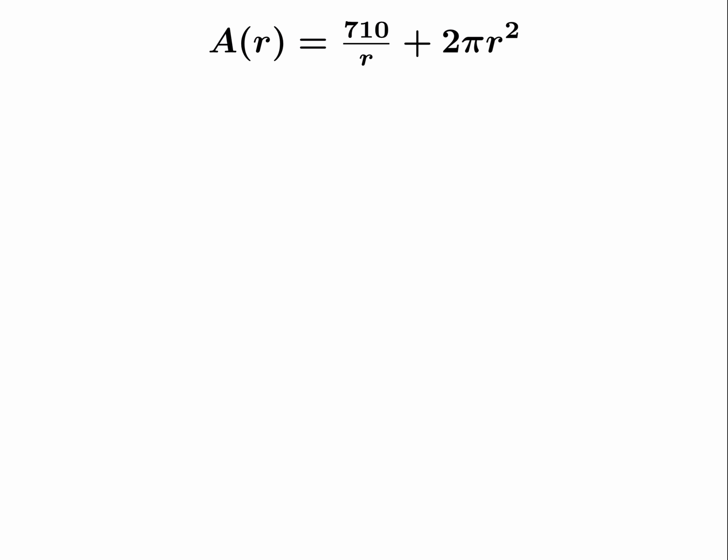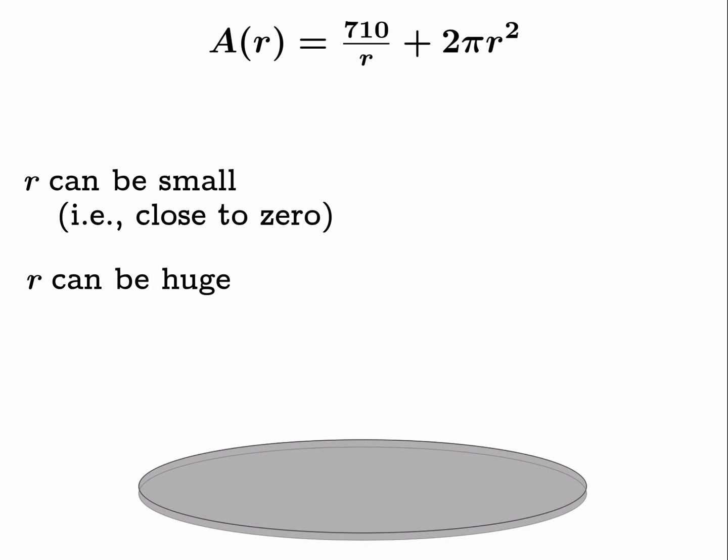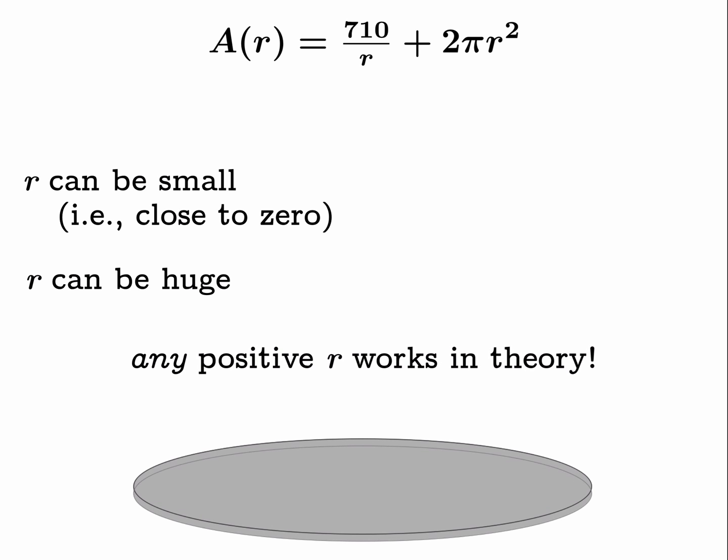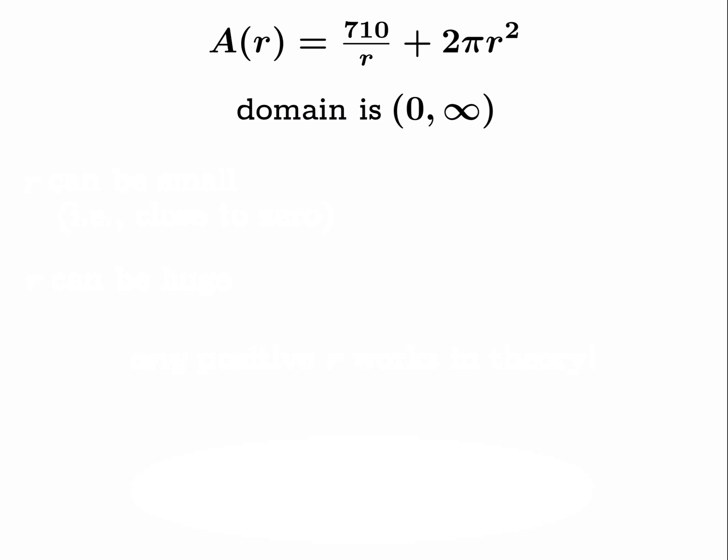So the natural question is: what is the domain? If you just go by the formula, all real numbers except r equals zero work, but we have an application in mind—we don't want negative radius. So we can think of r as being small, close to zero, and you get this sort of skyscraper-like tube. You can increase r, and the height has to decrease because the volume stays the same, 355 cubic centimeters. So r can be as big as you like, and the height would get close to zero. In fact, any positive r works in theory. The domain of our function in this optimization problem is the open interval from zero to infinity.